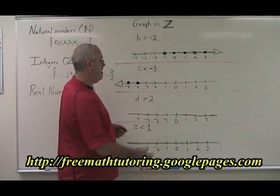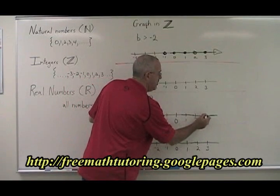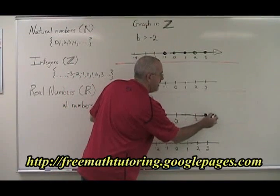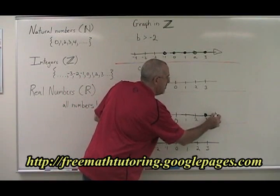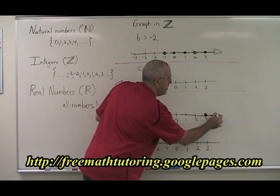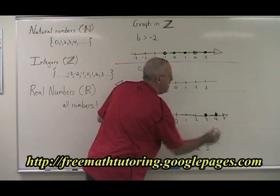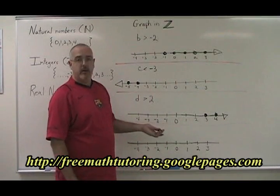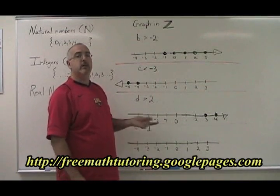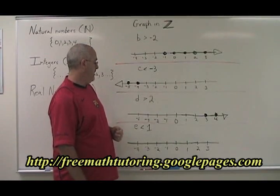D greater than 2. While this looks the same as it would in a natural numbers question, 3 and 4 are greater than 2. 2 isn't, and we go on forever in the positive direction.